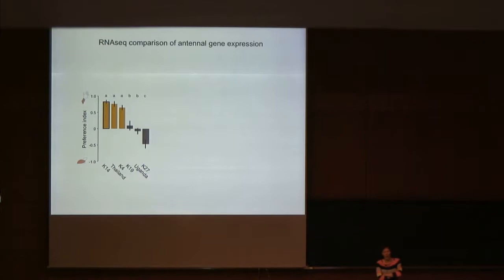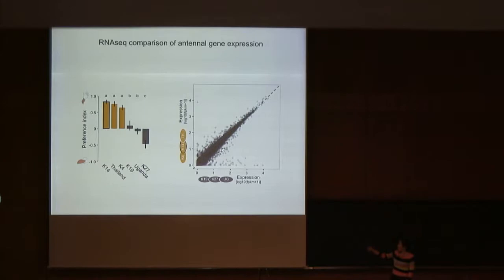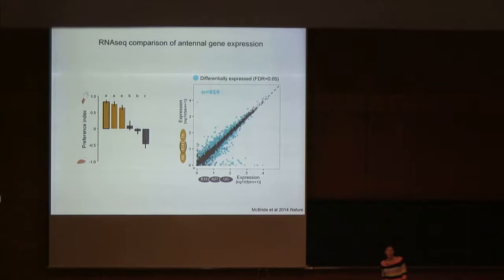We conducted an RNA-seq comparison of antennal gene expression starting with six colonies that differed in their response to host odors trapped on nylon sleeves. Average expression of all annotated genes in the genome was compared across three forest colonies and three domestic colonies. In general, most genes are expressed at about the same level in both groups, but there's quite a bit of scatter, and with a fairly conservative false discovery rate we find just under a thousand significant differences in expression between forest and domestic colonies.